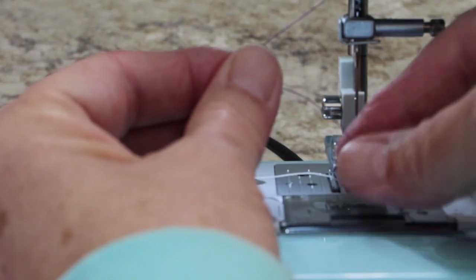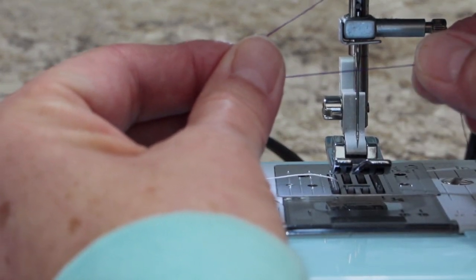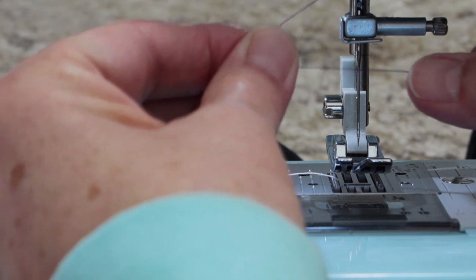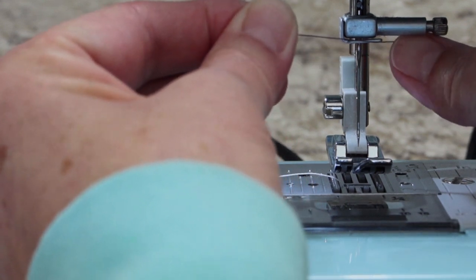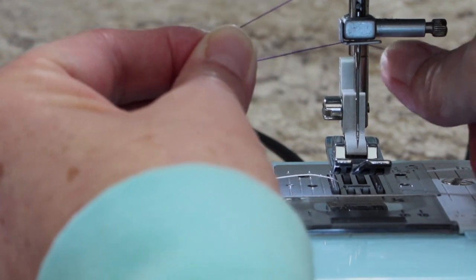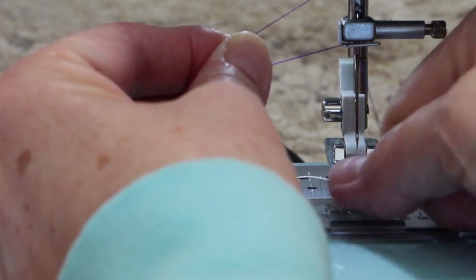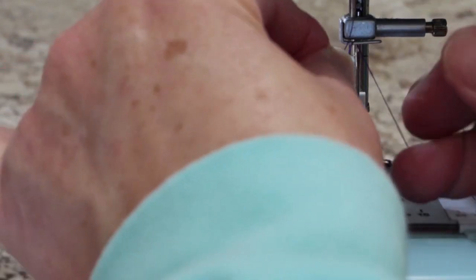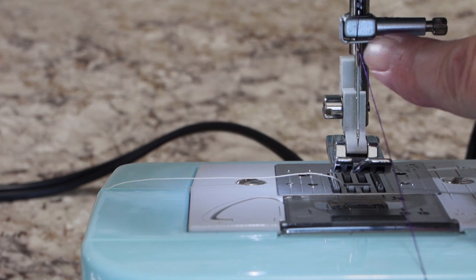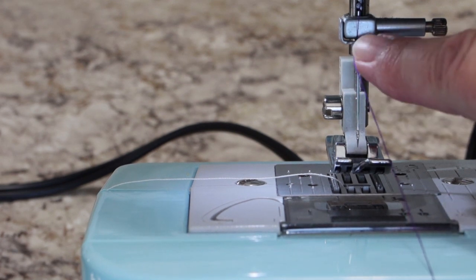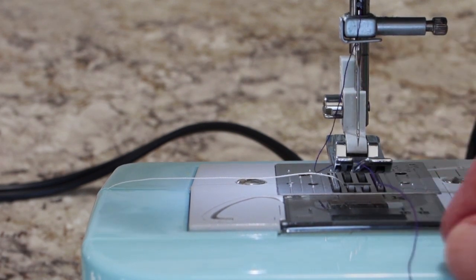Stretch your thread out horizontally, and just floss it right in between the little square piece of metal here, and this. So, it'll be right down coming out from under there.